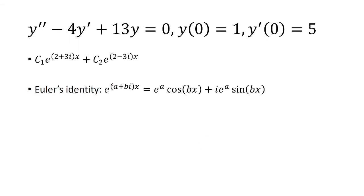Now we can simplify this further by using Euler's identity. Euler's identity says if you have something in the form e^(a+bi)x, that's equivalent to e^a cos(bx) + ie^a sin(bx).